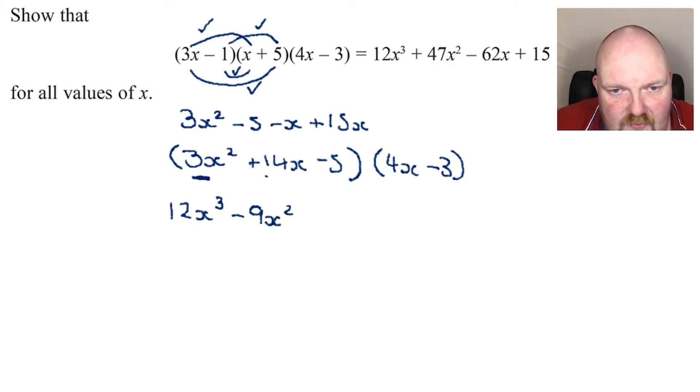Now I'm going to move on to this. 14x times 4x. 14 multiplied by 4 is 56, and so I've got plus 56x squared. And then 14x times negative 3. 14 times 3 is going to be 42, and so I've got minus 42x.